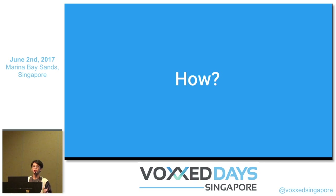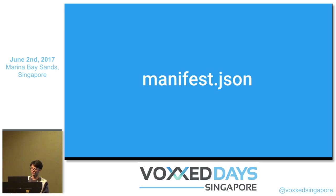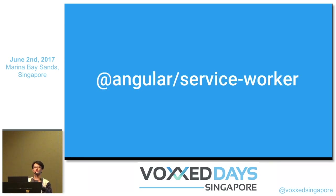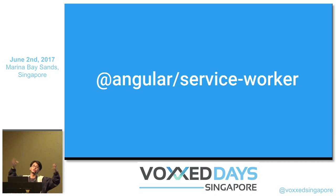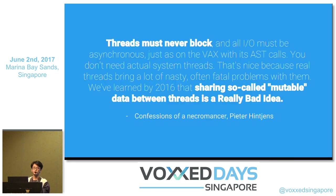How do we do PWA? The first thing is manifest.json — we need to create this file and specify parameters and provide certain assets. Second is the Angular Service Worker, which in Angular 2 and Angular 4 allows you to install a complete service worker and do everything service workers can do. Third — and this is very important — is a concept from Pieter Hintjens, founder of ZeroMQ and original contributor to AMQP, used by JP Morgan. He said: threads must never block, and sharing mutable data between threads is a really bad idea.